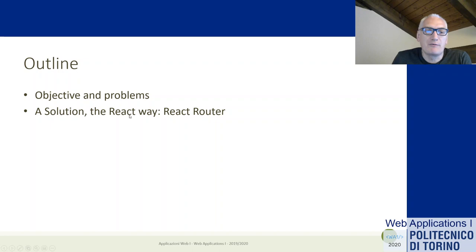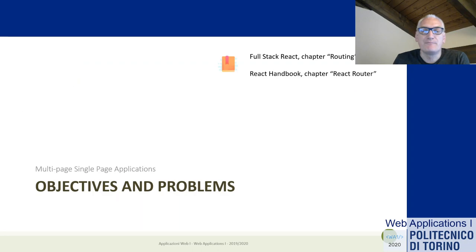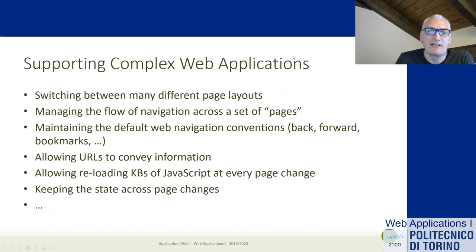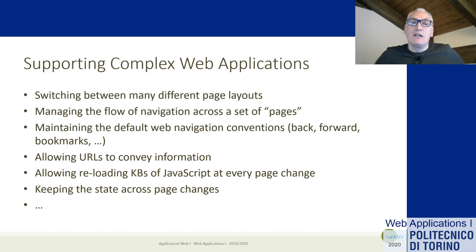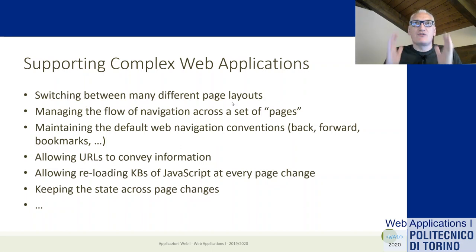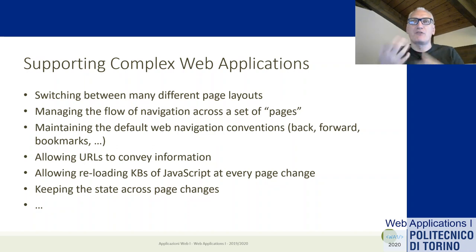First we'll devote some time to understand what we want to achieve and what the problem is, then we'll see what libraries and solutions React offers. Our goals: we want to support complex web applications — having a web page able to switch between different page layouts. It's not just one page like a to-do list; we want to switch pages, switch views, different kinds of contents, and have flow navigation across different pages.